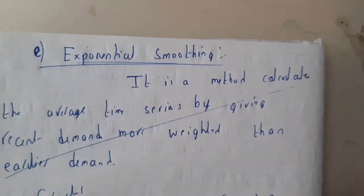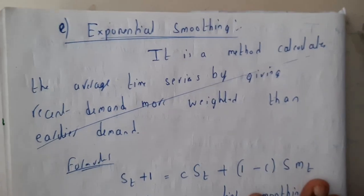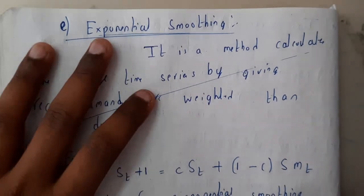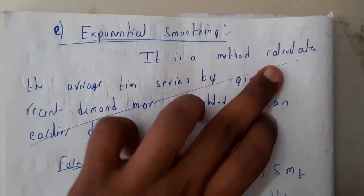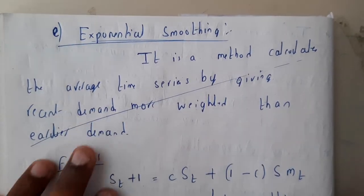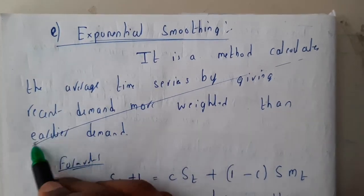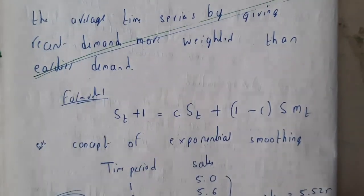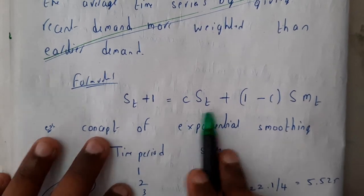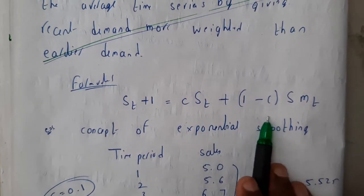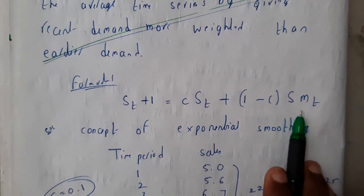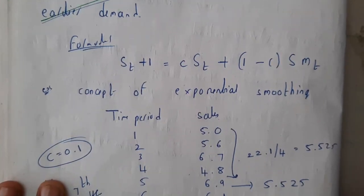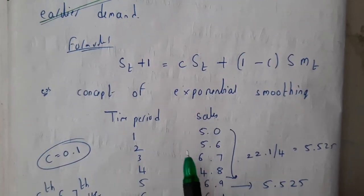The next method is exponential smoothing — it is a method for calculating a weighted average. According to the formula you just substitute values and get the result. The formula is: S(t+1) = c·S(t) + (1 − c)·S_mt. Note: the subscript is t+1, not S plus 1 as a whole.